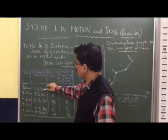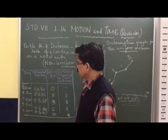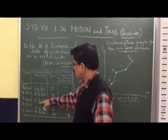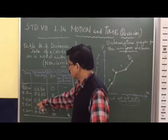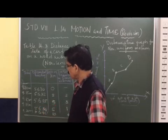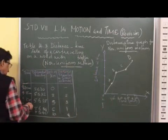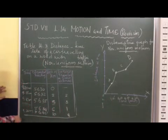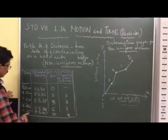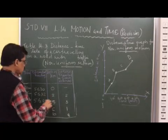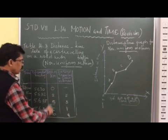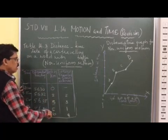At nine o'clock the odometer reading is 56,360 km; at 9:05 it is 56,329; at 9:10 it is 56,356; at 9:15 it is 56,360; and at 9:20 it is 56,400. The distances traveled are 0, 2, 5, 6, and 10 km. So the distances are not uniform.